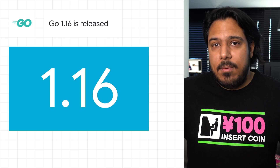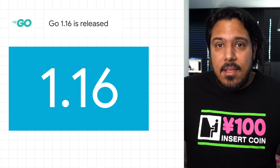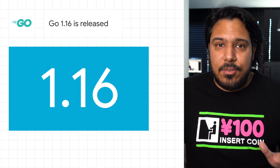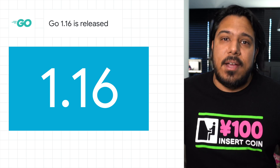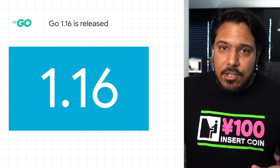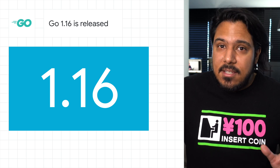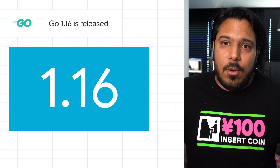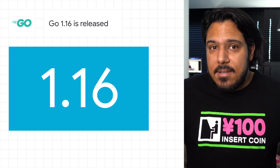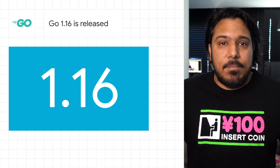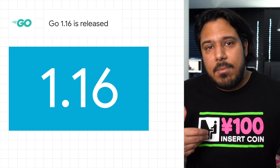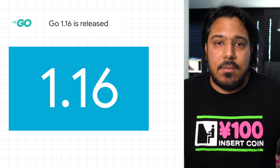Go version 1.16 has been released. This version makes it easy to bundle supporting data files into your Go programs with a new embed package. It adds support for macOS ARM64, also known as Apple Silicon, and adds a bunch of other improvements and bug fixes which you can read about in the release notes.